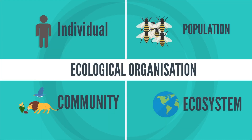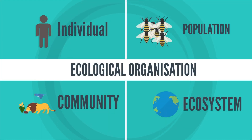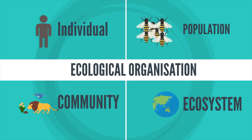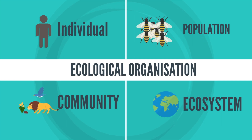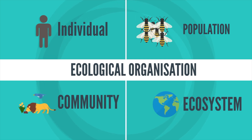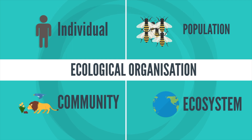An ecological organisation has four levels. The lowest level includes individual organisms, then we have a population, then we have communities, and then finally we have the whole ecosystem.